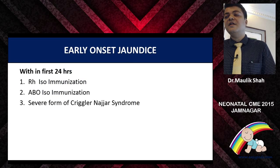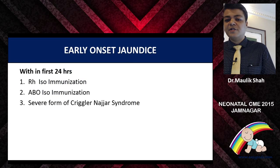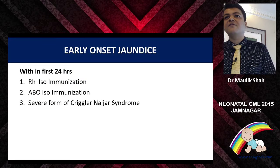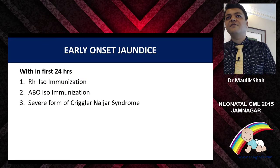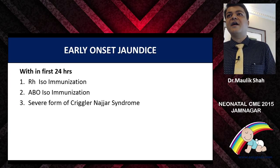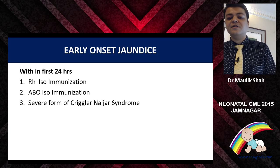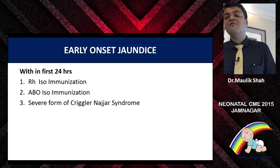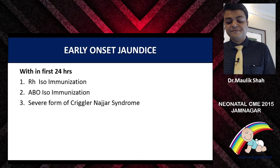When we see early onset jaundice — occurring within the first 24 hours — the causes that come to mind are RH isoimmunization, ABO isoimmunization, or very rarely a severe form of Crigler-Najjar syndrome.